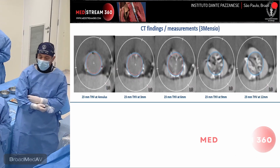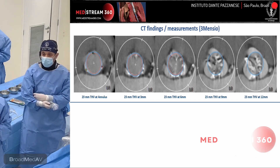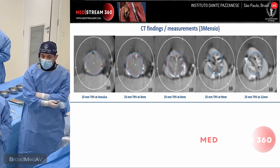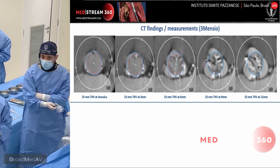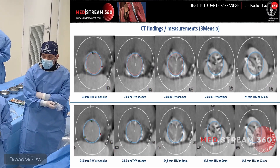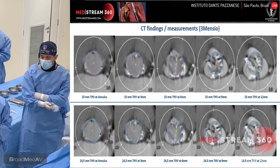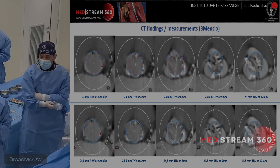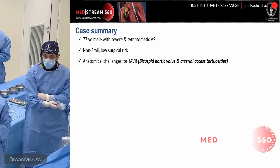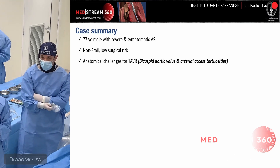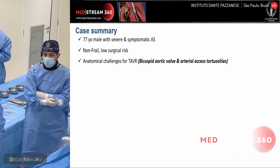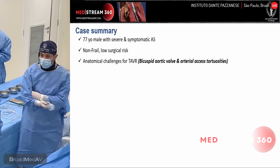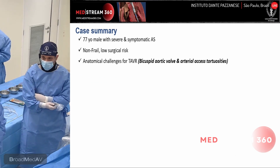We have done some measurements and simulated the implantation of two different sizes of a balloon-expandable valve. We used the circle method to do this. You can appreciate 23 on the top and 24.5 below. So in summary: 77-year-old male with severe and symptomatic aortic stenosis, non-frail, low surgical risk, and anatomical challenges for TAVR — bicuspid aortic valve and arterial axis tortuosities.